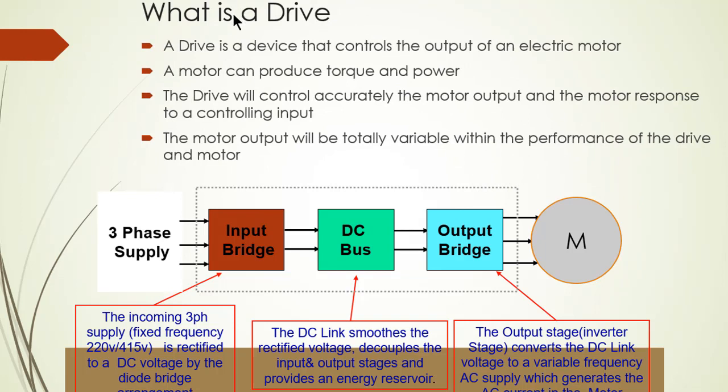What is a drive? A drive is a device that controls the output of an electric motor. What is a drive, what is an inverter, what is a VFD? Both are the same. VFD means variable frequency drive. So a drive is a device that controls the output of an electric motor. The motor can produce torque and power, so the drive will accurately control the motor output and motor response to a controlling input.